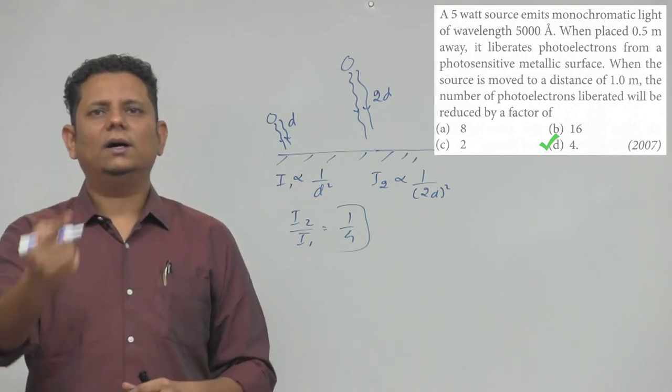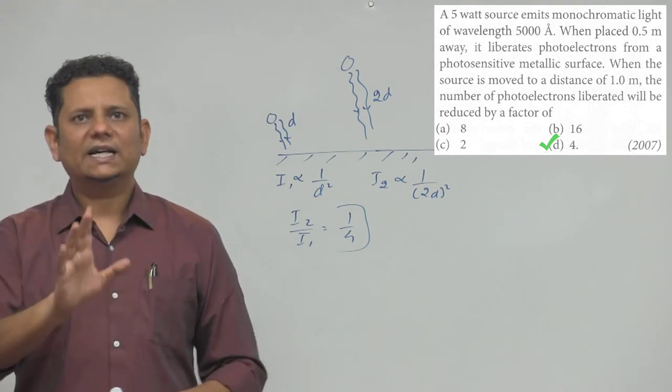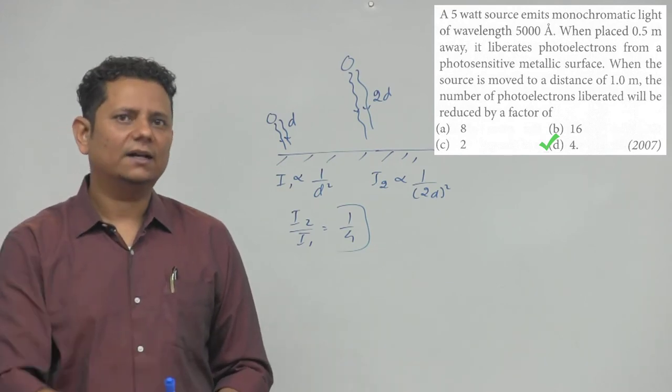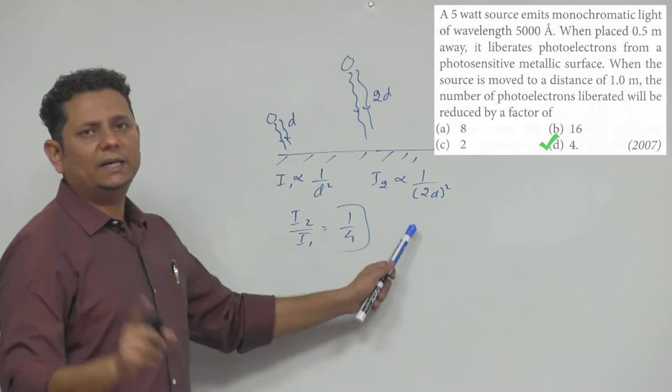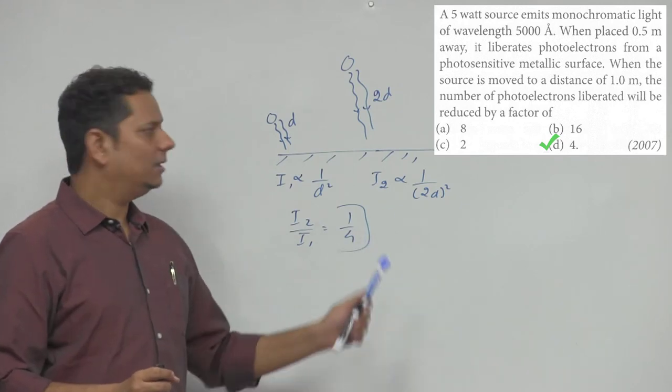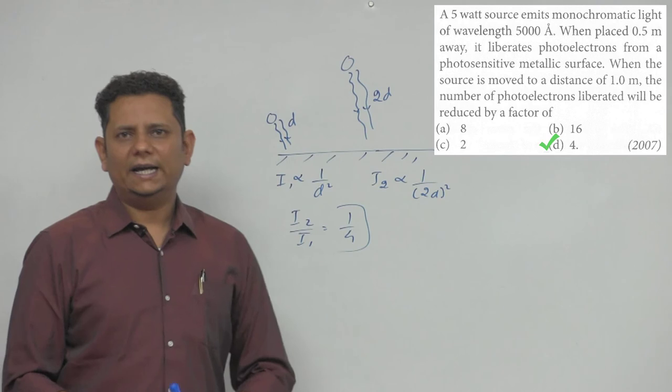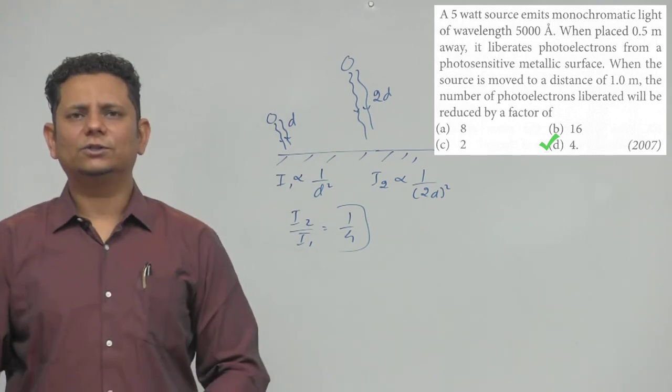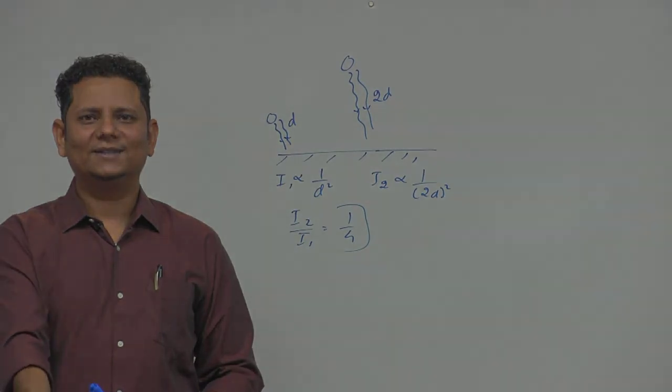photoelectrons liberated will be reduced by a factor of 4. So that's the right answer.